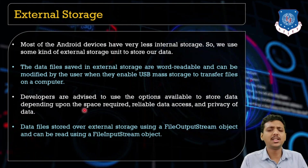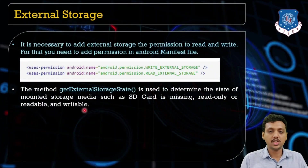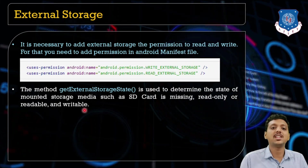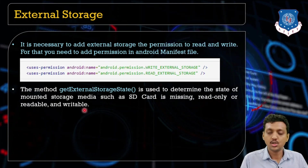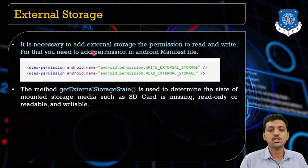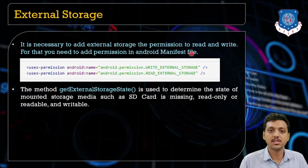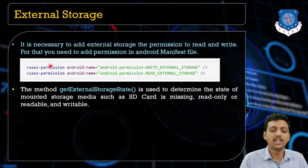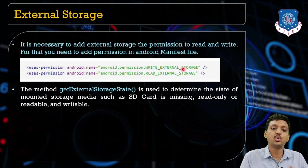External storage is very important because your application tries to store something outside its scope, so it is necessary to give the user permission. I'll explain permissions in the next lecture — don't worry about it. In an upcoming lecture I will talk about permissions in Android. But here it is necessary to add external storage permission to read and write data, which you add in the AndroidManifest file using the uses-permission tag above the activity tag.